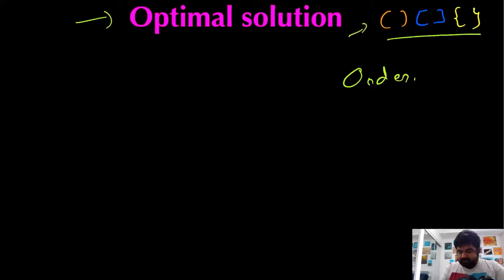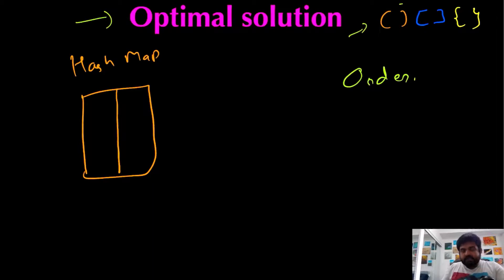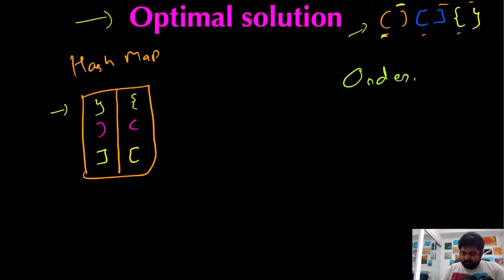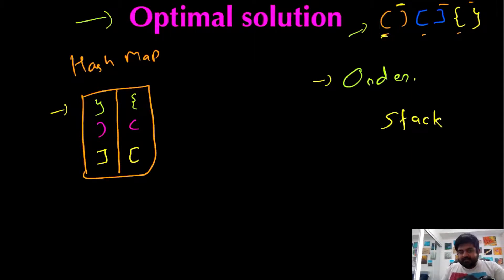For the optimal solution, we know we need to take care of two things: whether the opening and closing number of brackets are the same for each of the three types, and the order in which they are opened and closed. For every single opening bracket, there has to be a corresponding closing bracket — they're always in pairs. To quickly look them up, we're going to use a hash map with all closing brackets as keys and their corresponding opening brackets as values. To handle order and occurrences, we'll use another data structure called a stack.